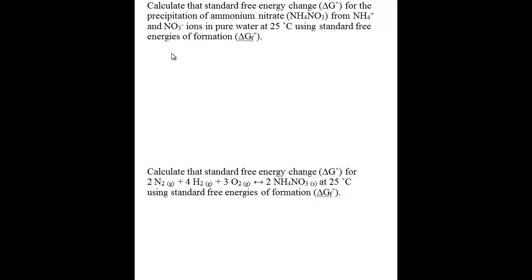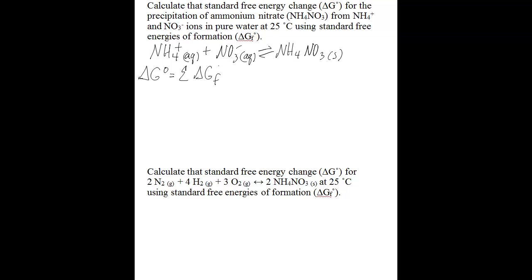The reaction we're dealing with here is where ammonium in aqueous form and nitrate in aqueous form form the precipitate ammonium nitrate in solid form. You can find the delta G naught, or the standard free energy change, for this reaction by taking the sum of the delta GF naught, or the standard free energy of formation, of the products.